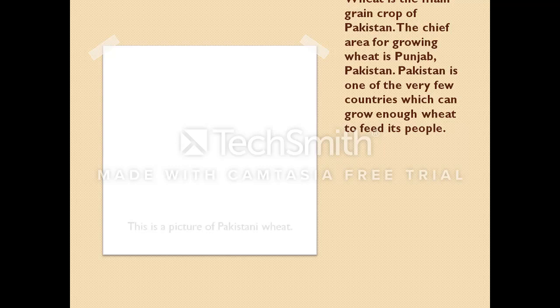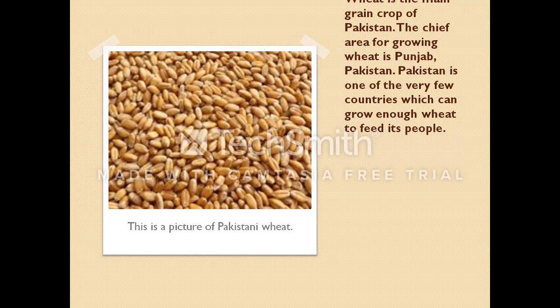Here we have wheat. Wheat is the main grain crop of Pakistan. The chief area for growing wheat is Punjab, Pakistan. Pakistan is one of the very few countries which can grow enough wheat to feed its people. Here is a picture of Pakistani wheat — these are the grains of wheat, and wheat is used to make flour.